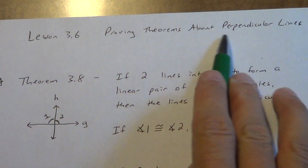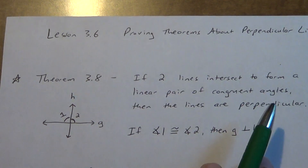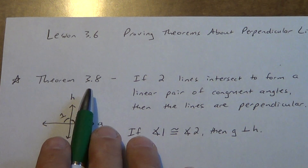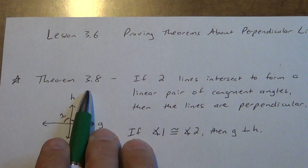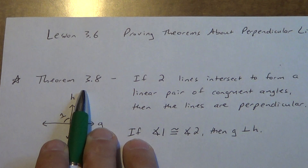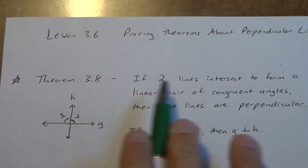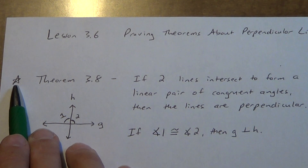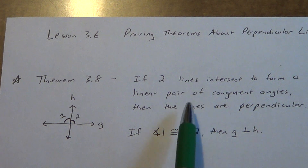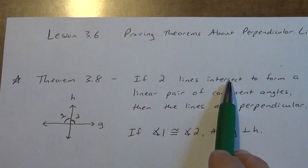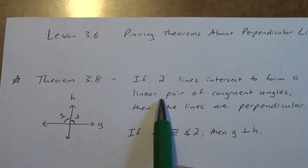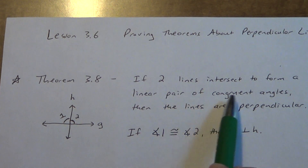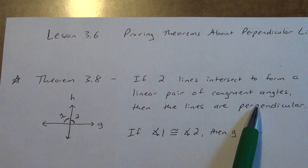So lesson 3.6, proving theorems about perpendicular lines. The first one we're going to look at is Theorem 3.8. This does not have a name. When we do theorems that don't have names, you do not memorize them by number. You need to memorize basically what they say. Now these ones aren't too difficult, and you'll notice this is a one-star theorem, so we don't use it a lot. If two lines intersect to form a linear pair of congruent angles, then the lines are perpendicular.